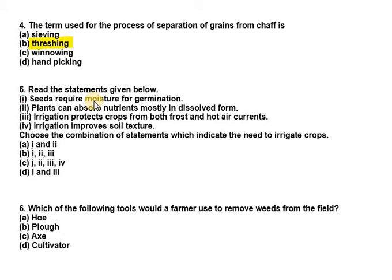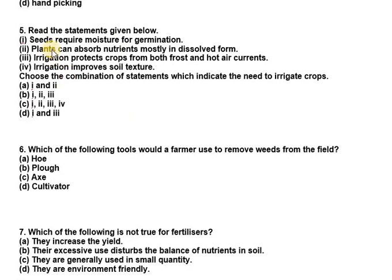Question five: read the statements given below — (1) seeds require moisture for germination; (2) plants can absorb nutrients mostly in dissolved form; (3) irrigation protects crops from both frost and hot air currents; (4) irrigation improves soil texture. We need to find the combination of statements which indicate the need to irrigate crops.